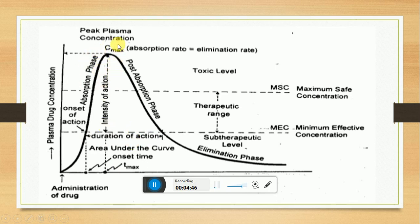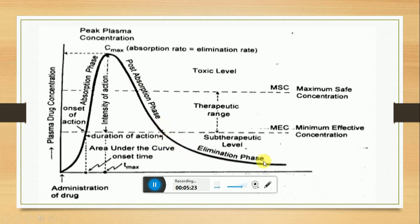Besides this, during peak plasma concentration there are three phases. Before peak plasma concentration is the absorption phase; after peak plasma concentration is the post-absorption phase, followed by the elimination phase. During the absorption phase, absorption rate is greater than elimination rate. During post-absorption phase, absorption rate is less than elimination rate. At Cmax, absorption rate equals elimination rate. During the elimination phase, absorption is over and only elimination occurs.